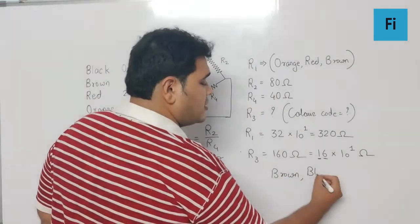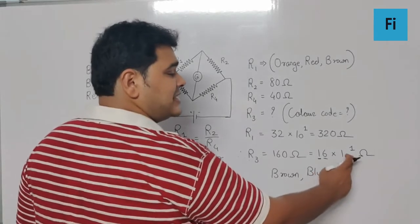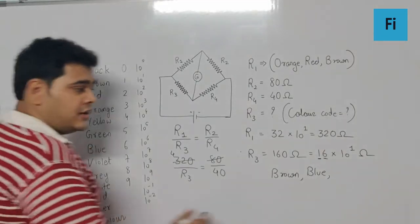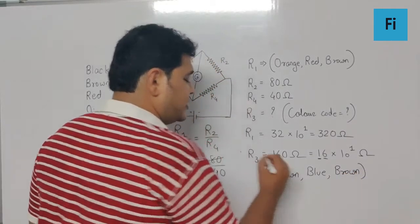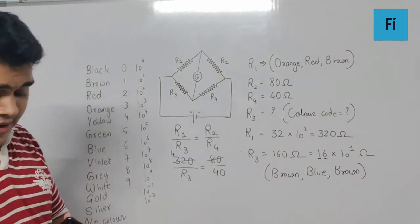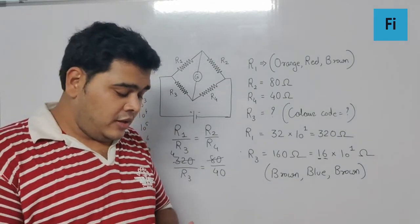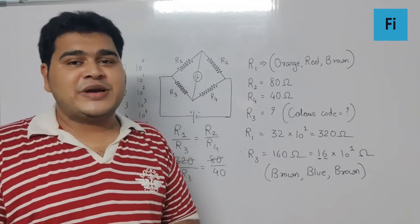Now the multiplier is 10 raised to 1, and 10 raised to 1 represents brown color, which means the third band is going to be brown in color. So the color code as an answer for R3 is going to be brown, blue, brown, and that is your final answer.